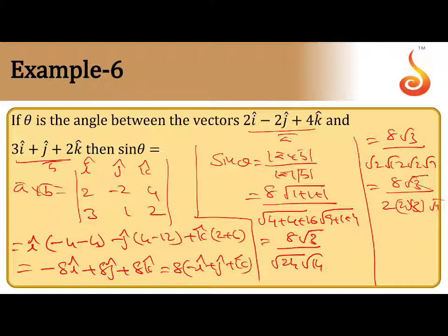Root 3 cancel, so 8 by 4 root 7, that is 2. So 2 by root 7 is the answer for this case.